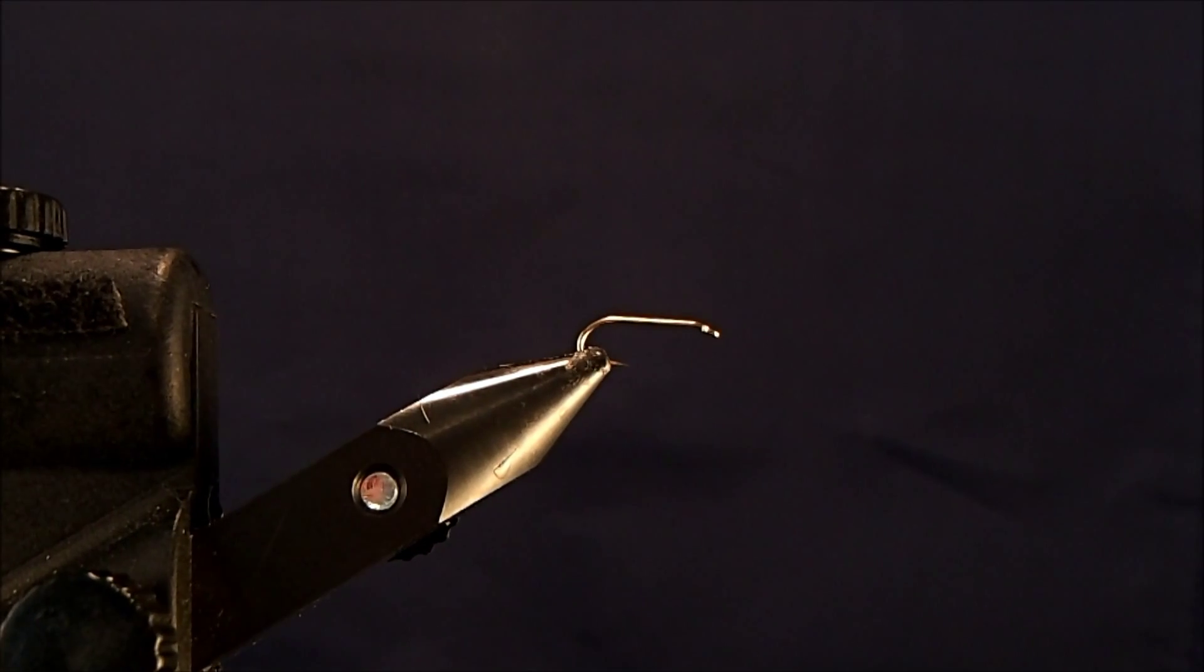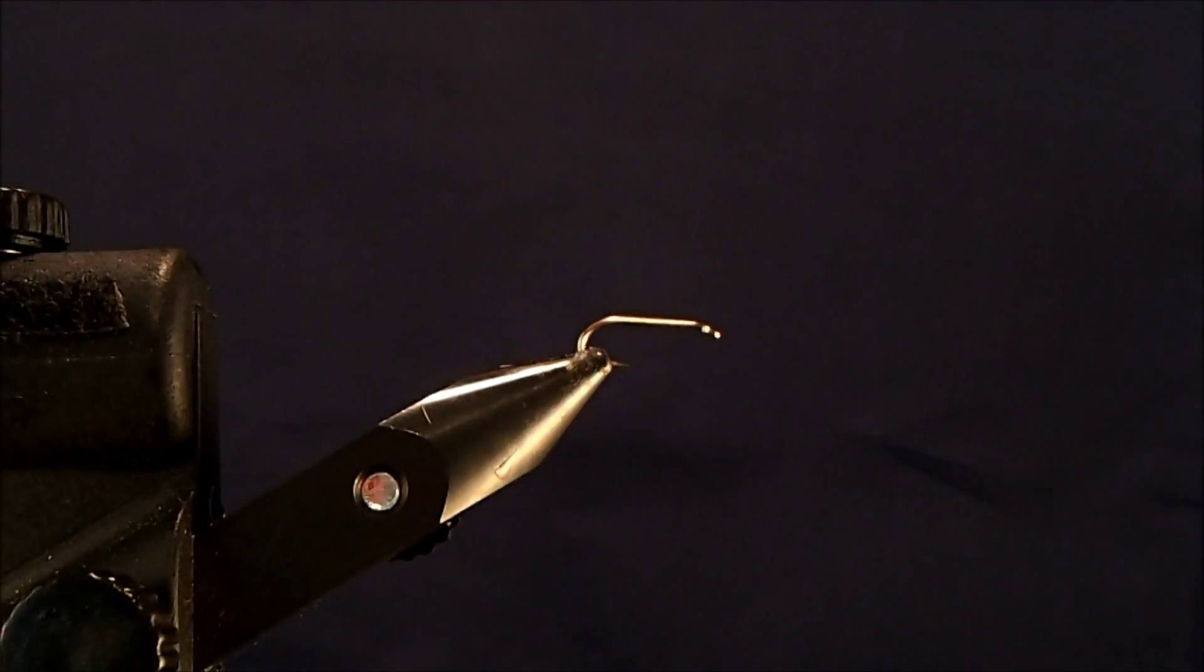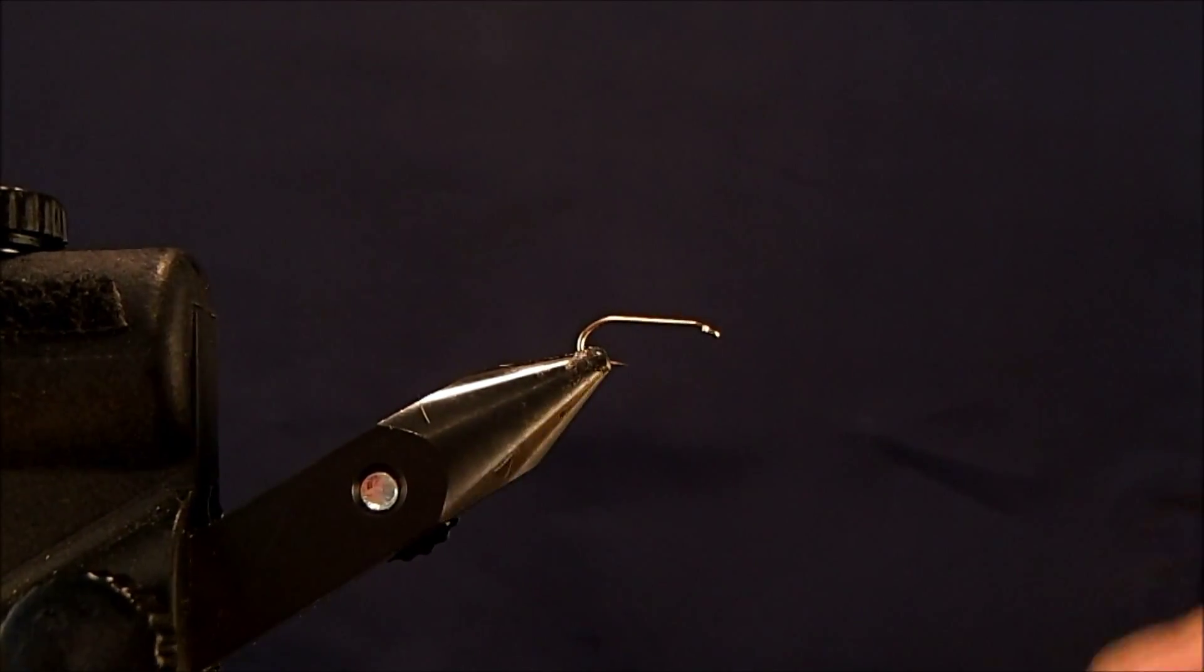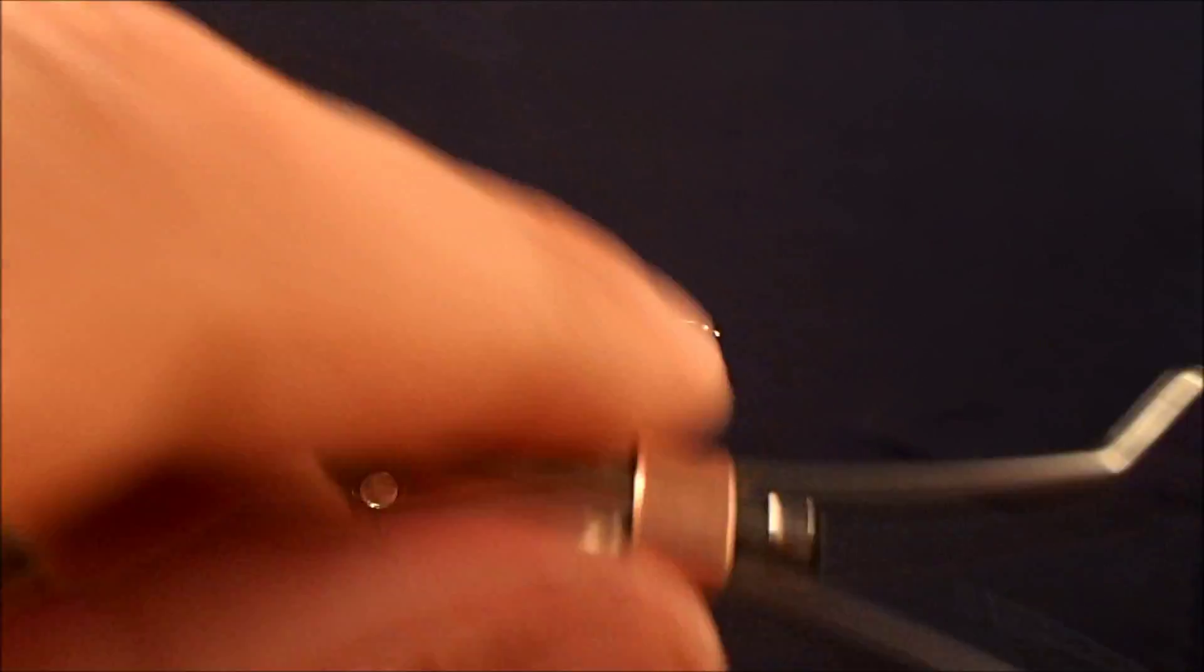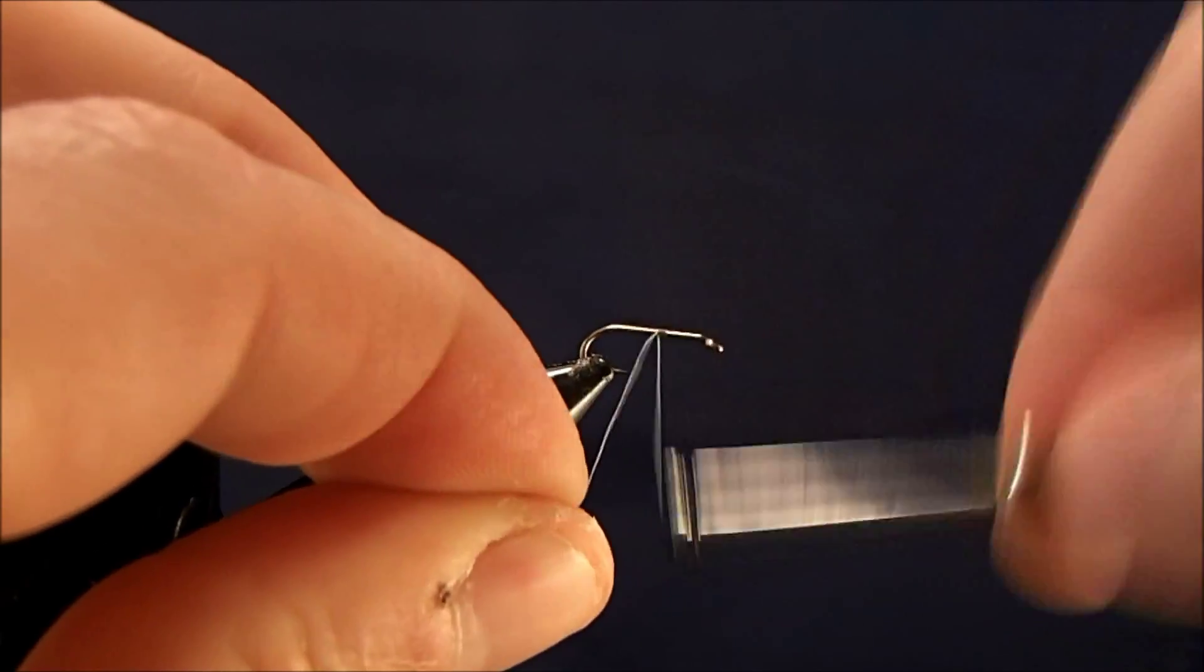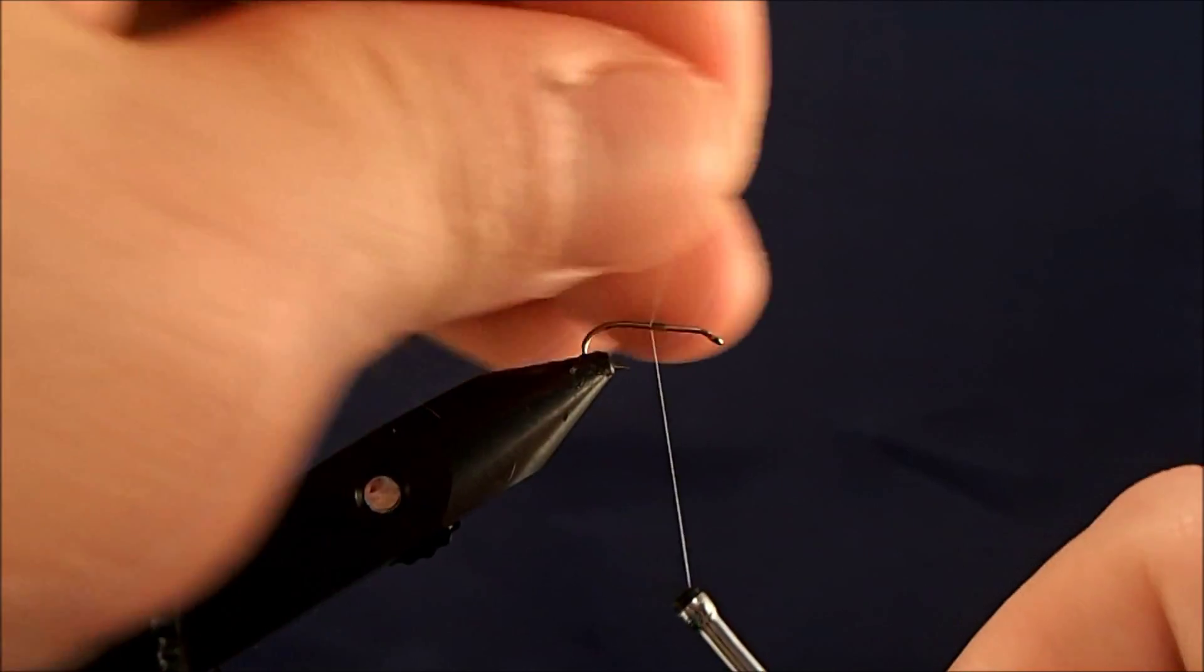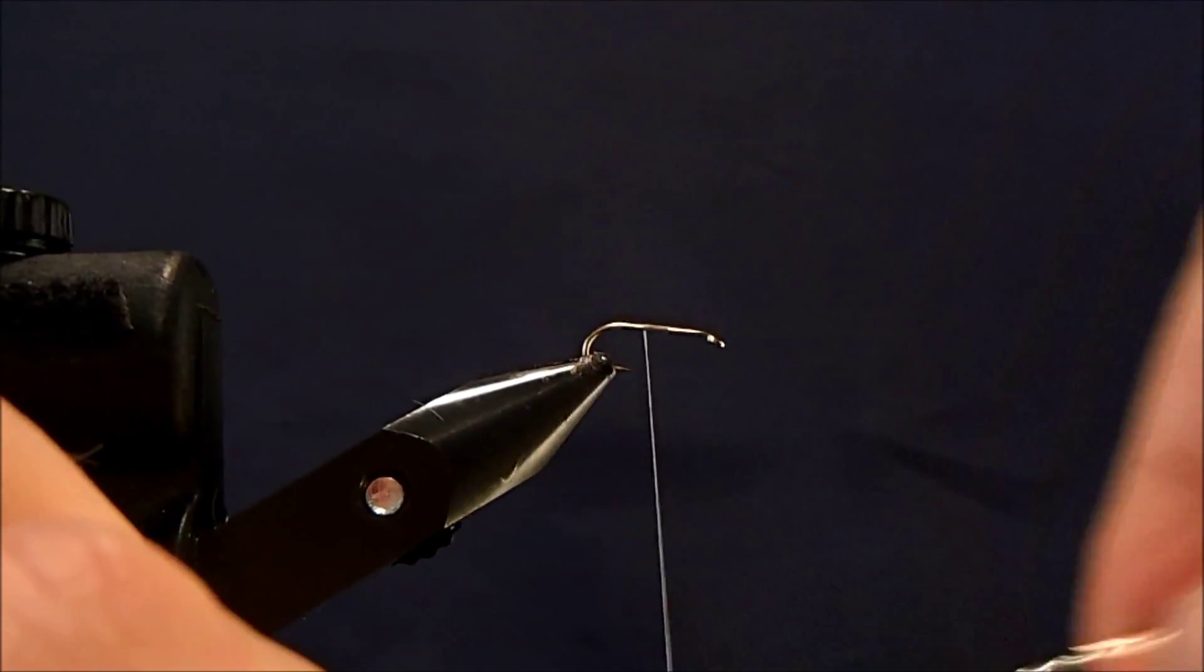I'm going to tie my version of the RS2. I'm going to start off with a size 14 wet fly hook or nymph hook, and to it I'm going to add some ADOT gray thread just to get it started.